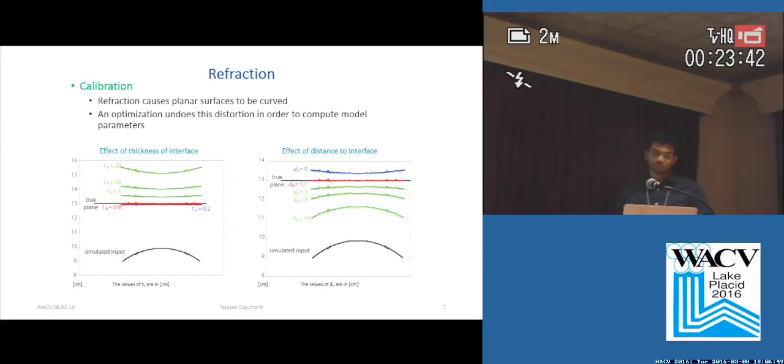And then once we have this model, we now have to calibrate the setup. So the key idea here is that if you have a single planar surface, it appears curved due to refraction. And we try to find the parameters of this model by undoing the effects of refraction and getting back this plane.